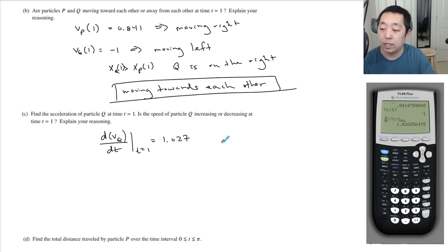Is the speed of the particle increasing or decreasing at time t equals 1? So here the acceleration of Q at 1 is greater than 0, and the velocity of Q of 1 is less than 0.